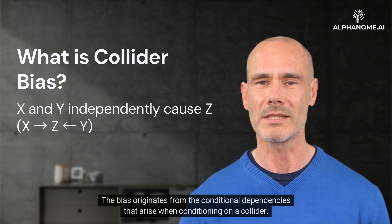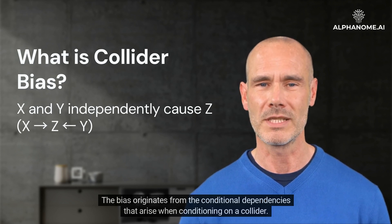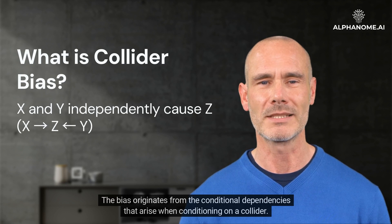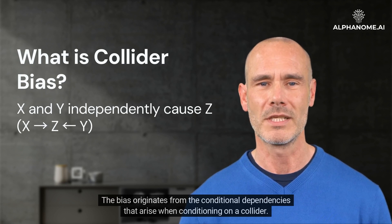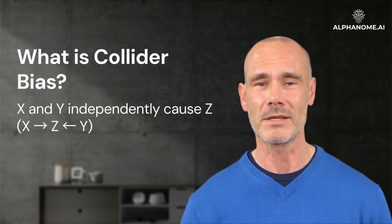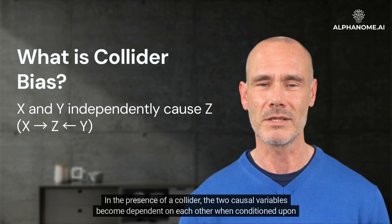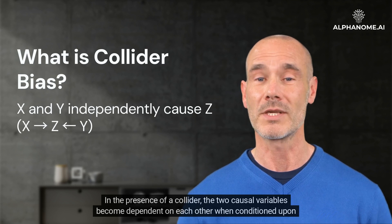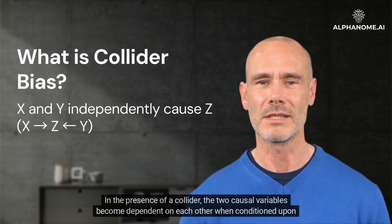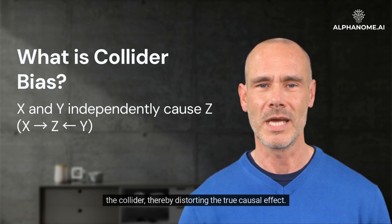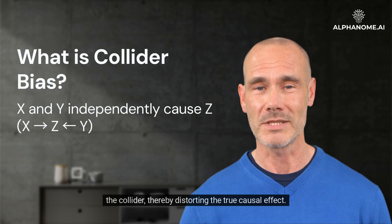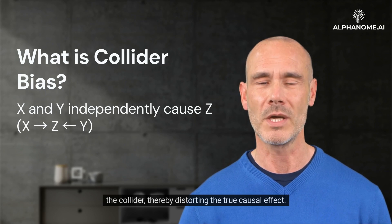The bias originates from the conditional dependencies that arise when conditioning on a collider. In the presence of a collider, the two causal variables become dependent on each other when conditioned upon the collider, thereby distorting the true causal effect.